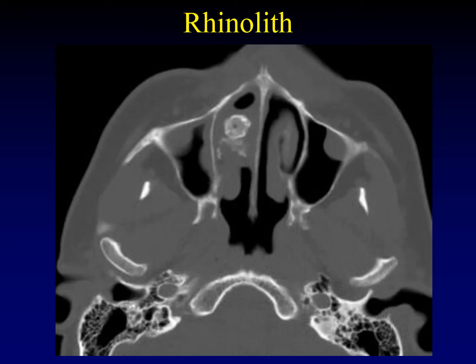Inspissated and trapped secretions within the nasal cavity can sometimes calcify and form what we call a rhinolith. These tend to have dense calcifications around the periphery and occur in characteristic locations in the anterior nasal vault.